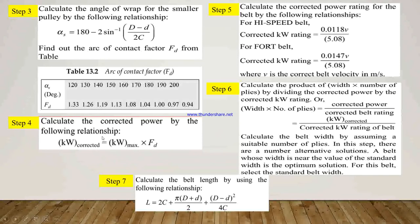In step number 4, we calculate the corrected power using: kW_corrected is equal to kW_max into FD, the arc of contact factor. In step number 5, we calculate the corrected power rating for the belt. For high speed belt, the corrected kW rating is equal to 0.0118 into velocity divided by 5.08. For fort belt, the corrected kW rating is 0.0147 into velocity divided by 5.08. In both cases, V is the correct belt velocity in meter per second.